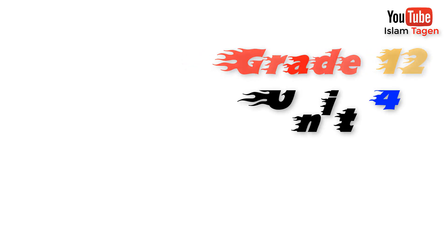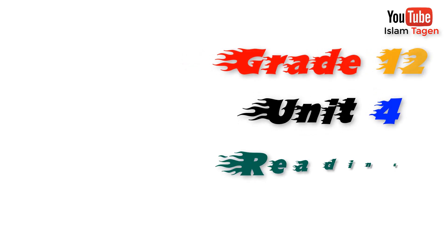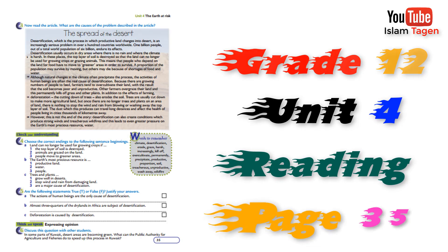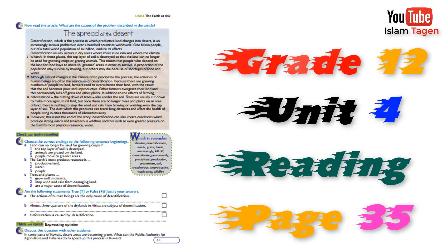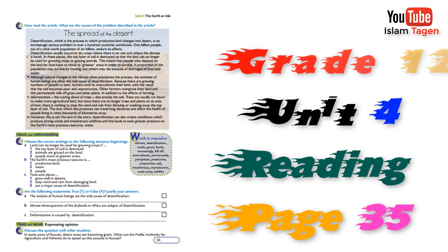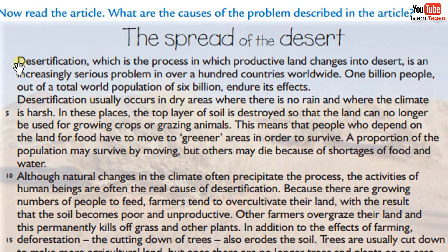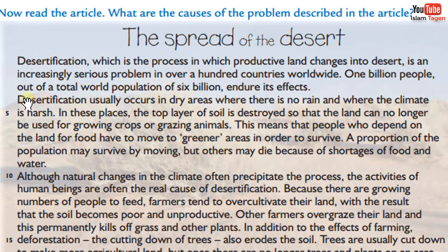Grade 12 Unit 4 Reading Page 35: The Spread of the Desert. Desertification, which is the process in which productive land changes into desert, is an increasingly serious problem in over a hundred countries worldwide. 1 billion people, out of a total world population of 6 billion, endure its effects.